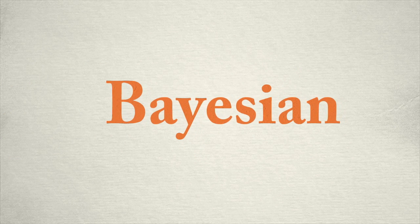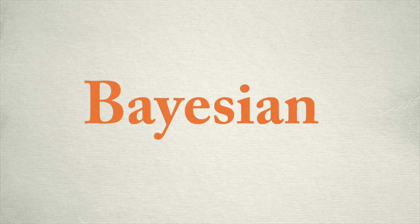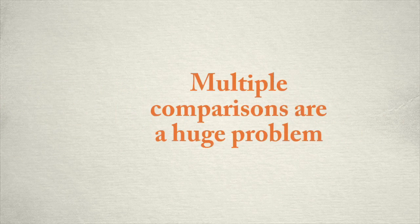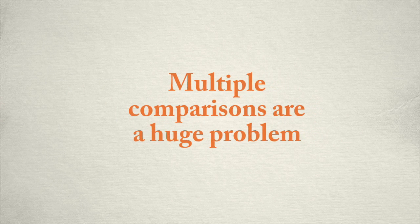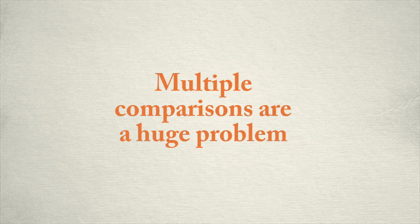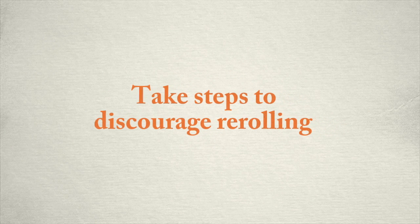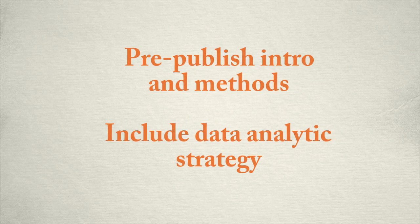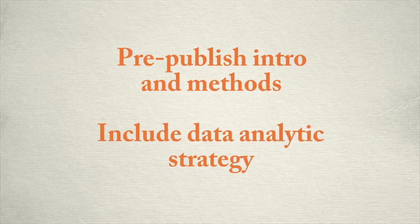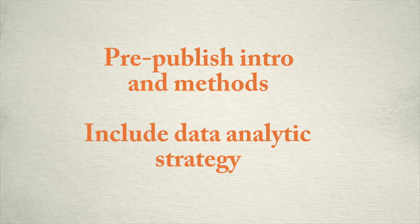Lastly, Bayesian analyses do not suffer the multiple comparisons problem because they are not using probabilistic thresholds to make significance decisions. Multiple comparisons are a huge problem in science. In my opinion, this is because of our somewhat archaic method of distributing and dispersing data and research to the broader scientific community. Simple steps could be taken, and have begun to be taken, to safeguard against researchers constantly re-rolling the dice. This might include pre-publishing intro and methods sections, including data analytics strategies, with a promise to have the paper published in full upon completion and following additional peer review of the remaining sections.